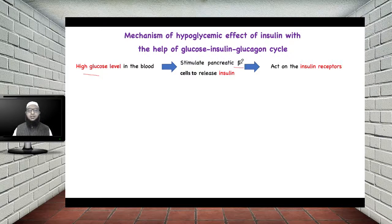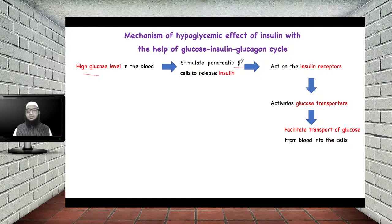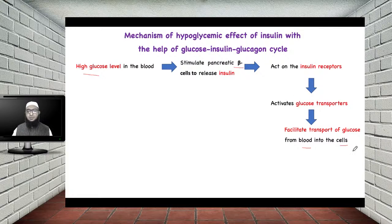Once insulin is released, it acts on the insulin receptor, and after acting on the insulin receptor it activates the glucose transporter. This glucose transporter facilitates transport of glucose from the blood into the cell. So when there is high blood glucose level, glucose will be transported with the help of this glucose transporter from blood into the cell, leading to uptake of glucose into the cell and a reduction in blood glucose level.